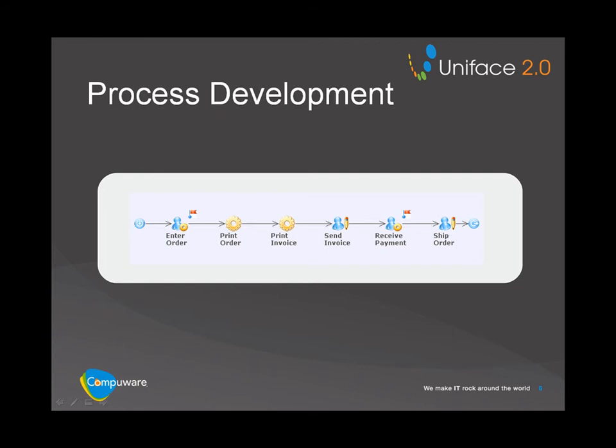The heart of the UnifaceFlow development environment is the UnifaceFlow Modeler, a graphical tool that allows you to model business processes. All model definitions are stored in a relational database — the development workflow repository. A process is modeled using the following building blocks: start and end elements that mark the start and end of the process; tasks, which are the activities that must be executed; flow elements that connect the tasks in a correct sequence; split and join elements that enable the process to branch; and messages that enable communication between processes.